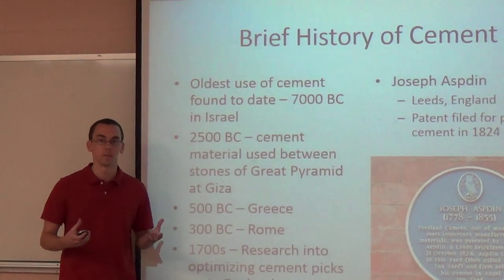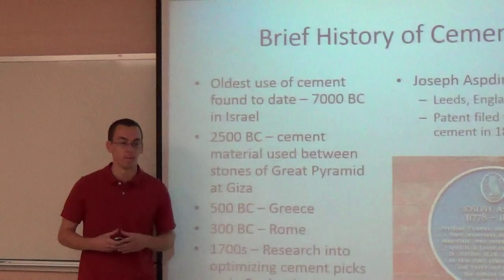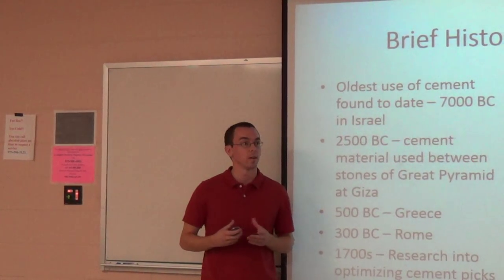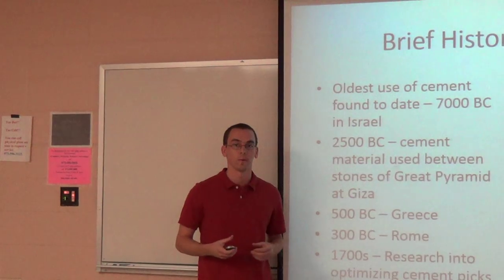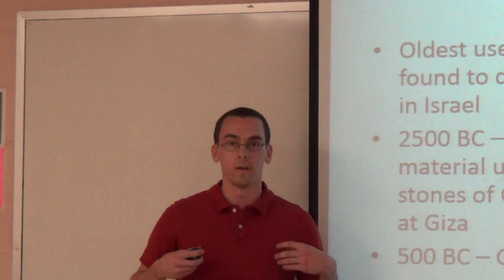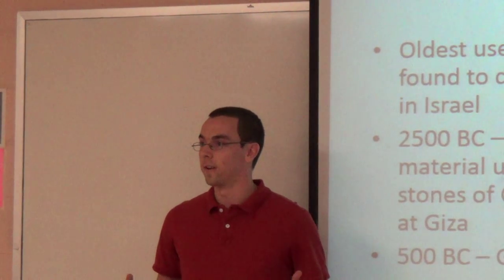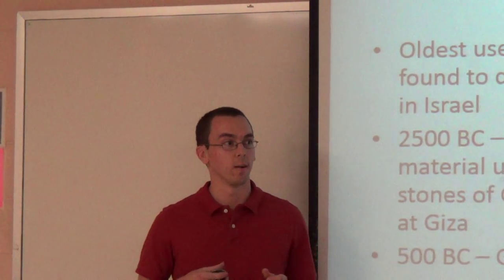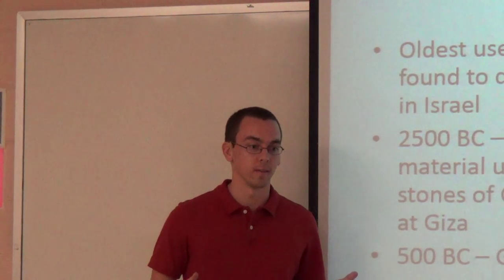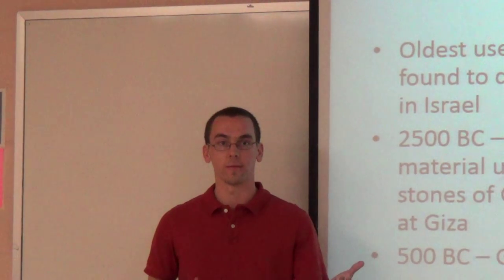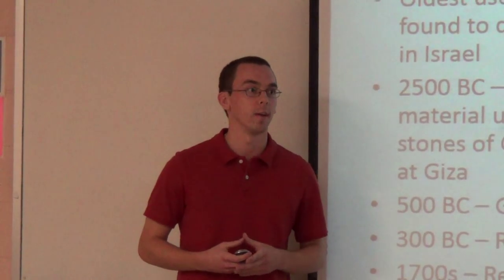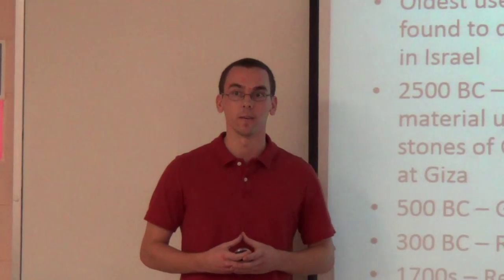which added more cement-like properties. Research into optimizing the chemical composition of cement didn't really begin until about the 1700s, mostly in England, and by 1824 a man named Joseph Aspdin submitted a patent for Portland cement, which is what is used in modern society today. It's not a brand name — that is actually the name of the material, and it was named after limestone quarried from an island named Portland in England.